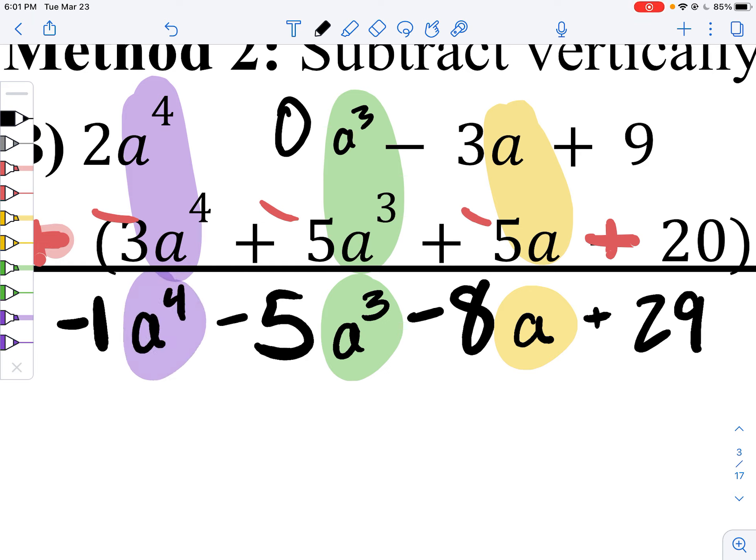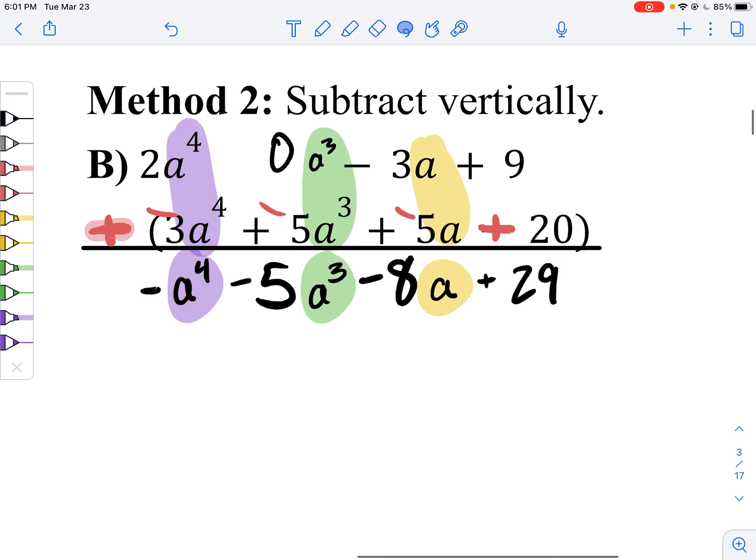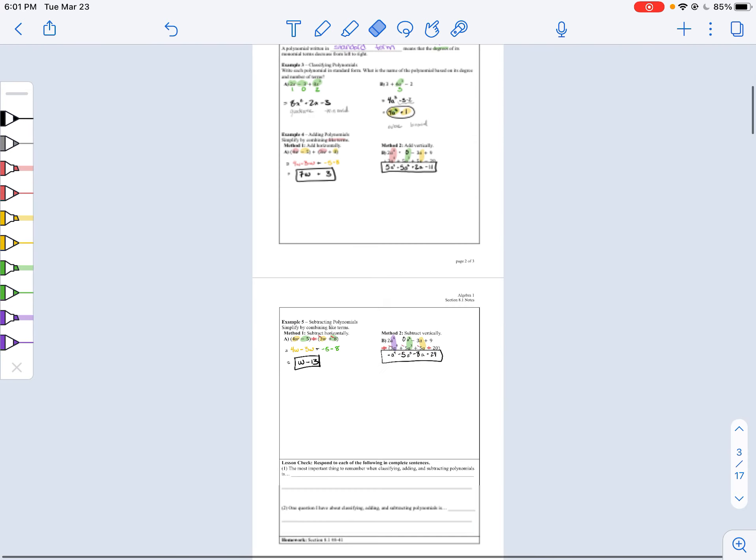But guess what? You don't need to write the 1, but you do have to put the negative. So that gives us a negative a to the fourth minus 5a cubed minus 8a plus 29. That's our final answer.